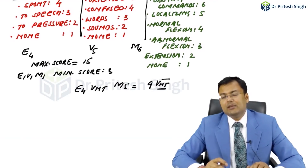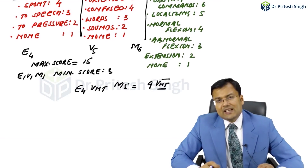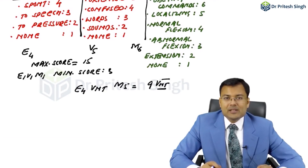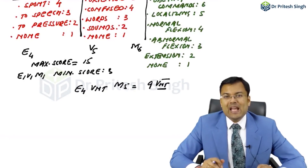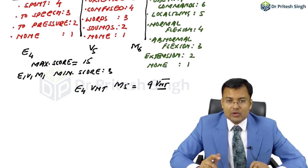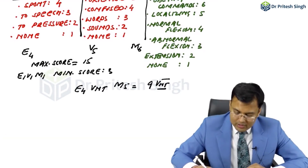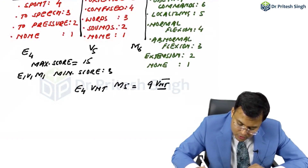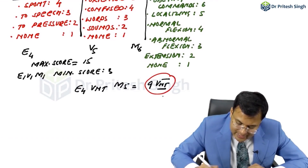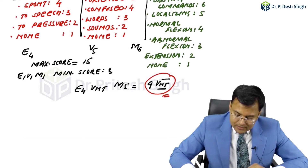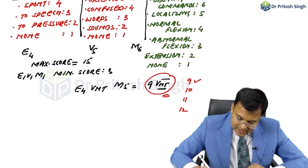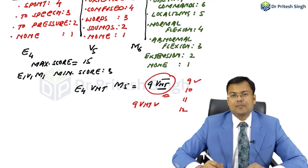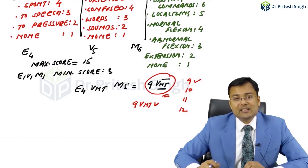VNT means Non-Testable. Initially, it was said that for a non-testable parameter, an additional score of 1 should be given and added to the final score. Nowadays, this is no longer followed — we do not add an additional score of 1. So if exam options are 9, 10, 11, 12, mark 9. And if the option '9 VNT' is available, that is the better answer. These are the latest updates.